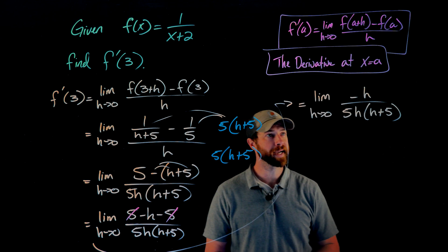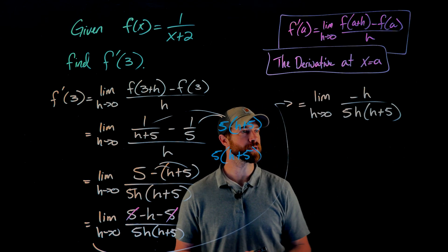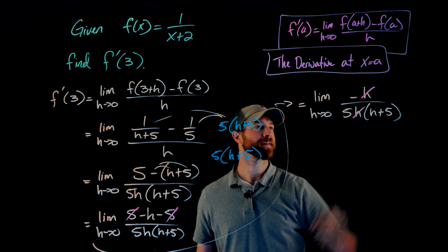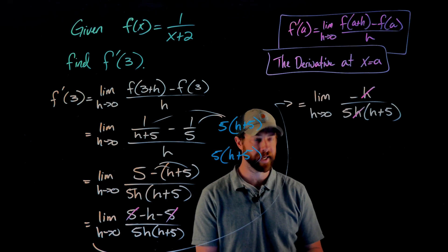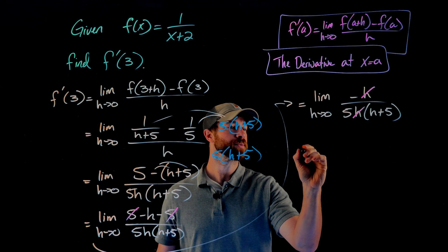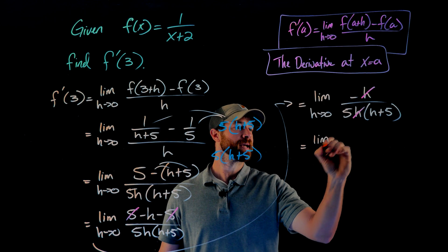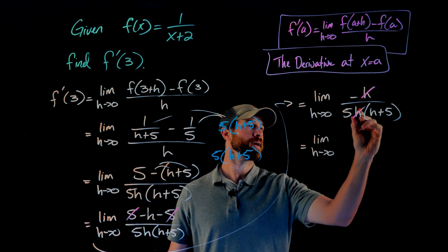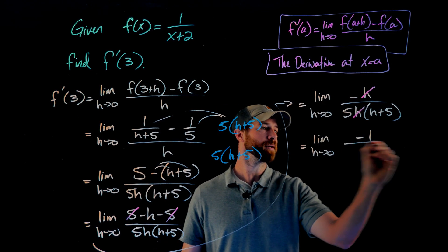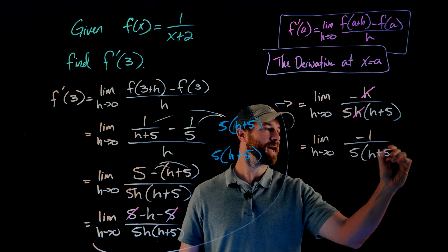Now I can do exactly what I was hoping to do after I've done all of this. I can now cancel this common factor of h between the numerator and the denominator. This will then give me this limit as h goes to 0 of now I have a negative 1 up here, and then 5 times h plus 5.